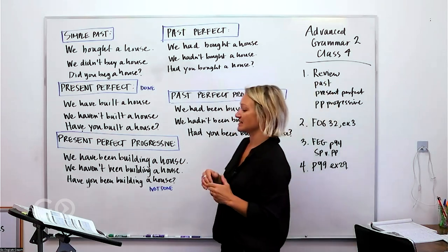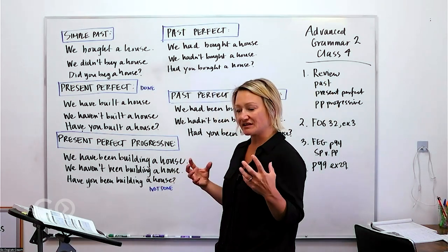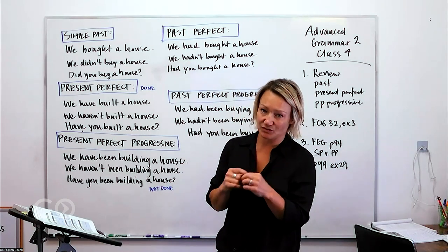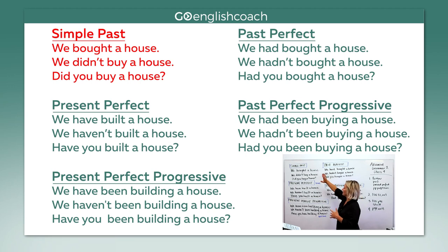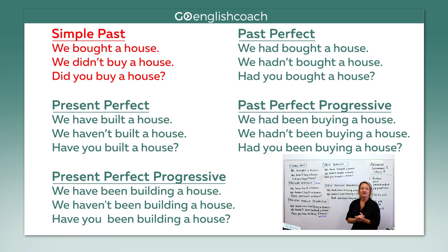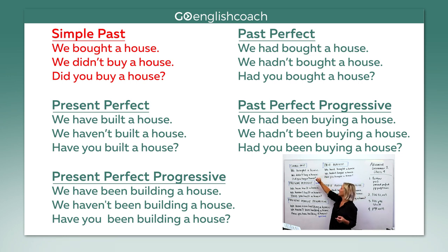Let's look at these and see if you can pick up on the nuances — the small differences between these tenses. With each tense I have an affirmative, a negative, and a question. So: 'We bought a house' — that's past tense. 'We didn't buy a house.' 'Did you buy a house?' Affirmative, negative, and a question.